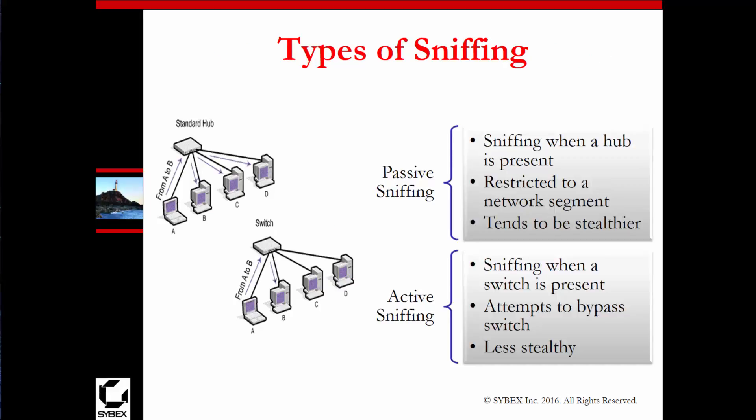Types of sniffing: passive and active. Passive is when you connect to a hub and it's restricted to network segments. While this is more stealthy with less noise, it doesn't always work. Active sniffing is where the sniffer is present on a switch and it attempts to bypass the switch. This is less stealthy and generates more noise. You can also have the switch configured so that all ports are mirrored on a specific port for packet capturing. The big thing: passive is stealthy, active has lots of noise.